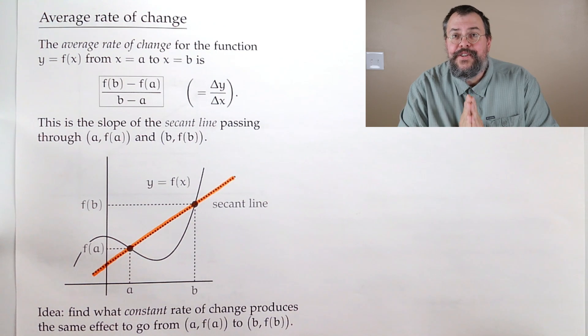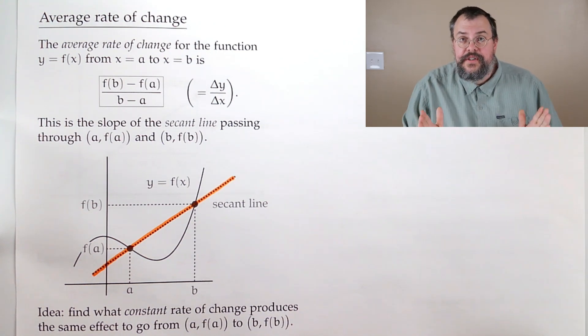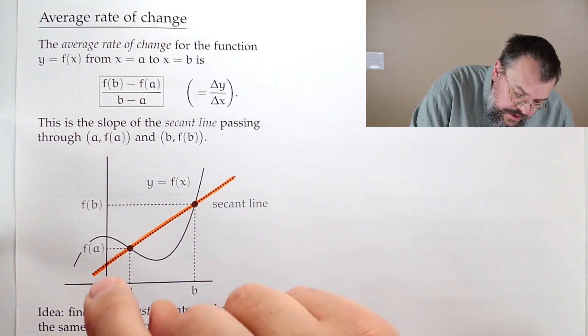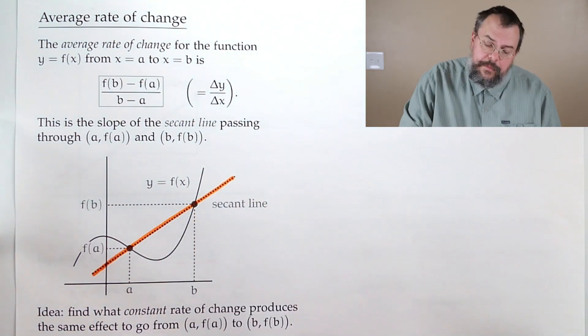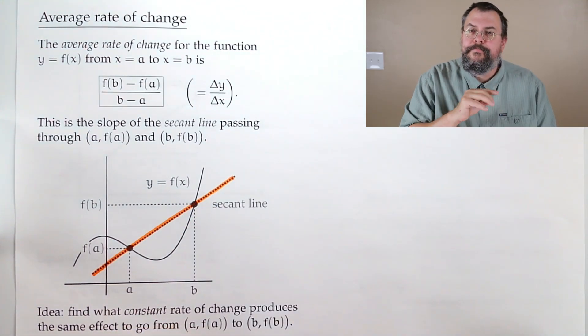Now, how does this fit in to calculus? Because we're interested not in the average rate of change. We're really interested in saying, well, what's the rate of change at a particular point? Now, if I say, you know, this is the average over some interval, but I want to say here, right here, what's happening? That's a different question.